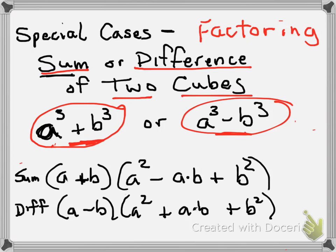This is a special relationship that you're just going to have to remember because there's not an easy way to derive it backwards. So when you're taking the sum of two cubes, this is how it factors. It factors into a binomial times a trinomial.